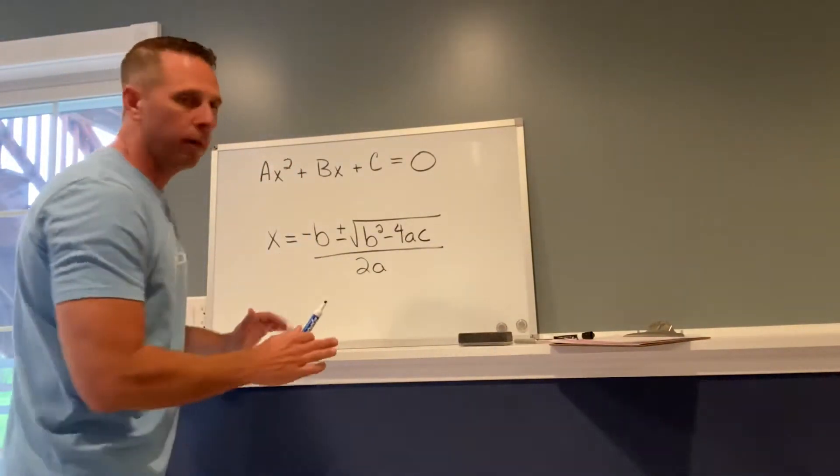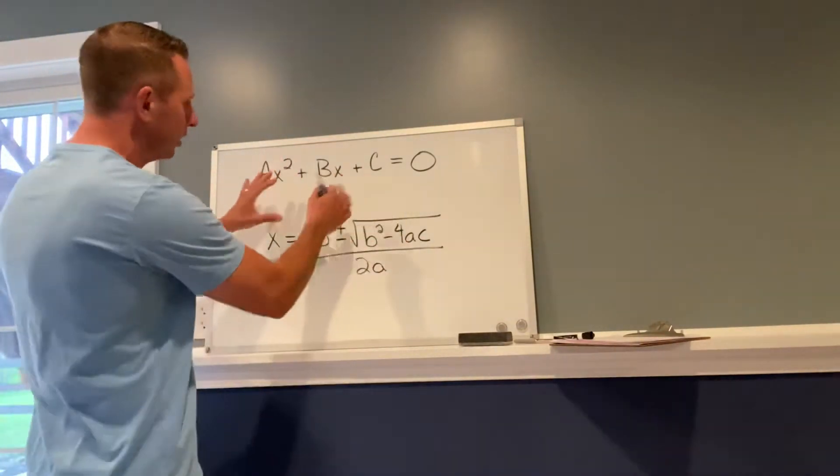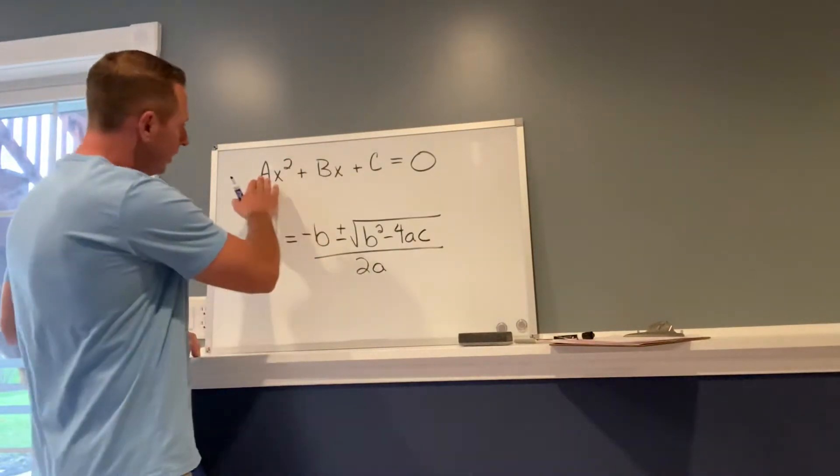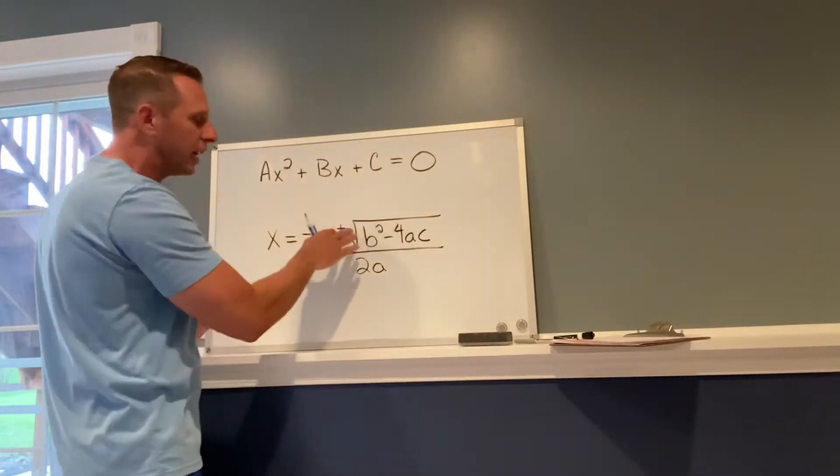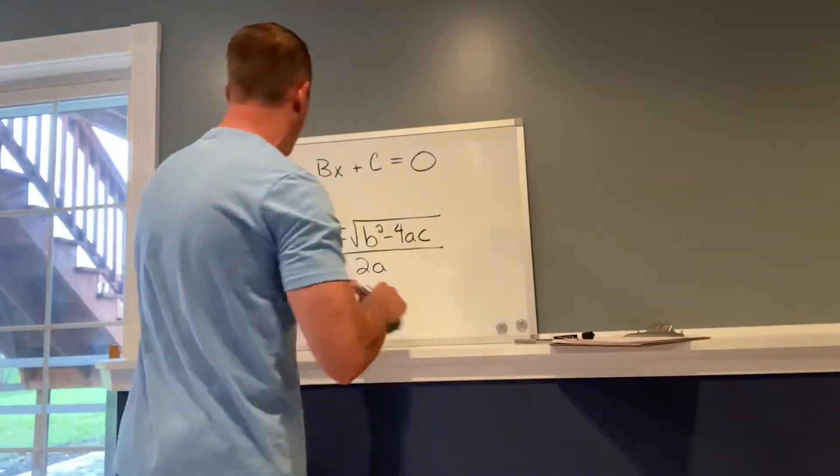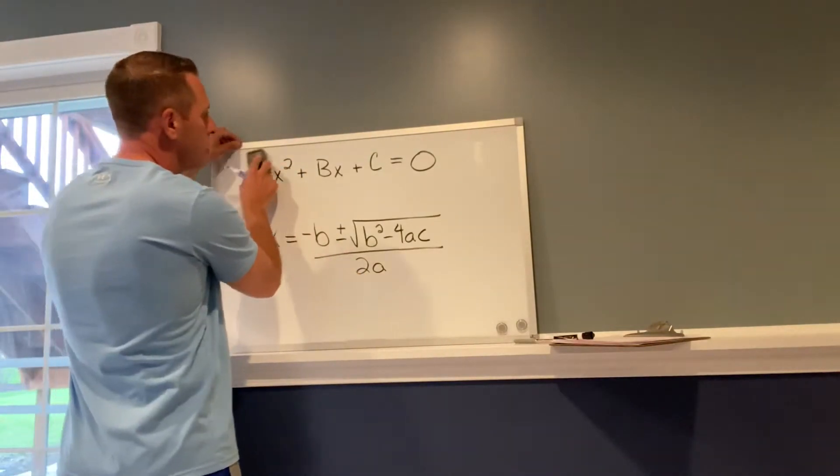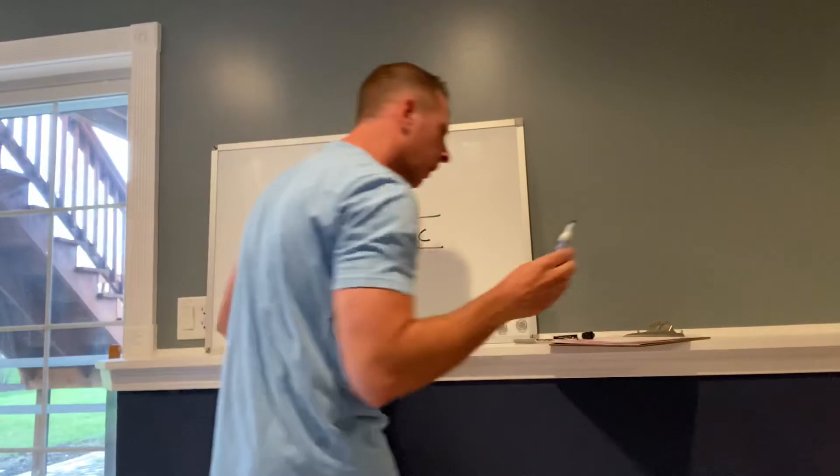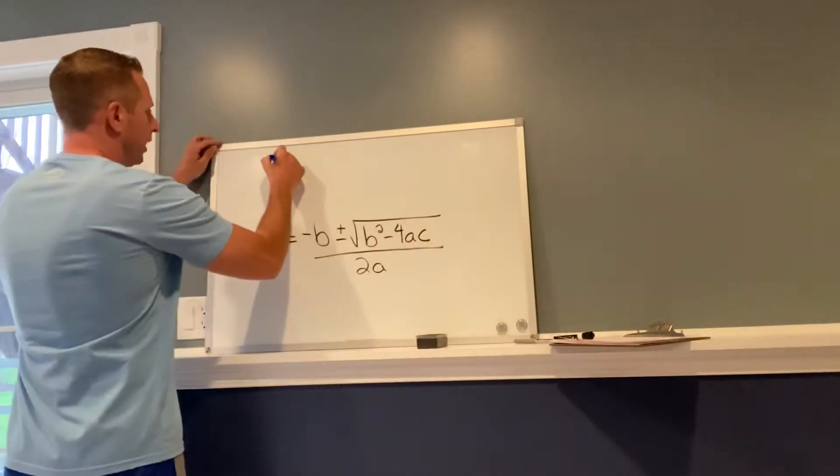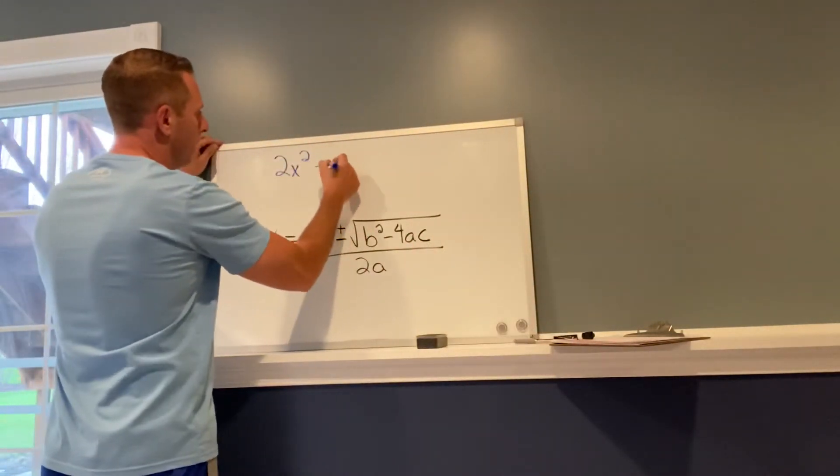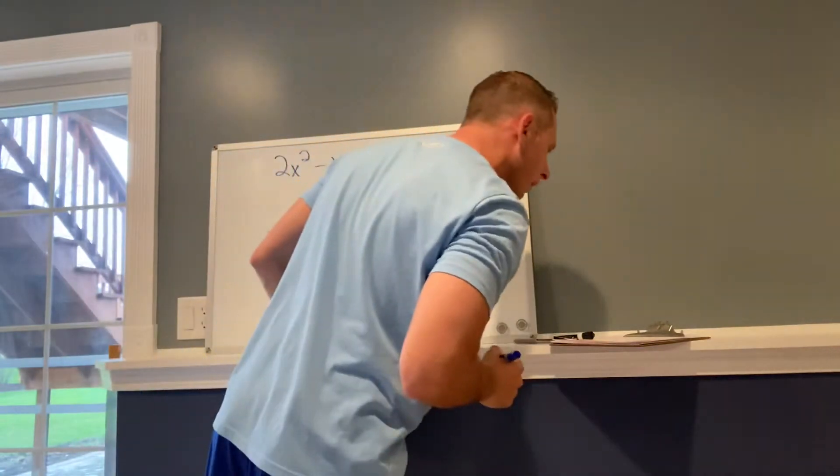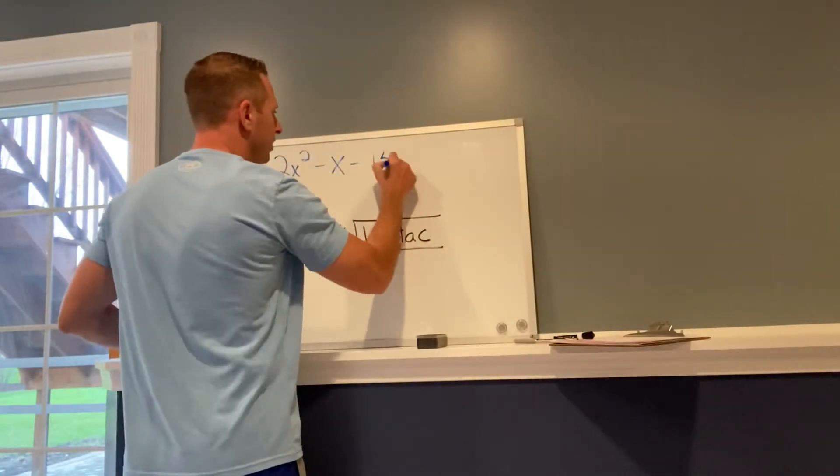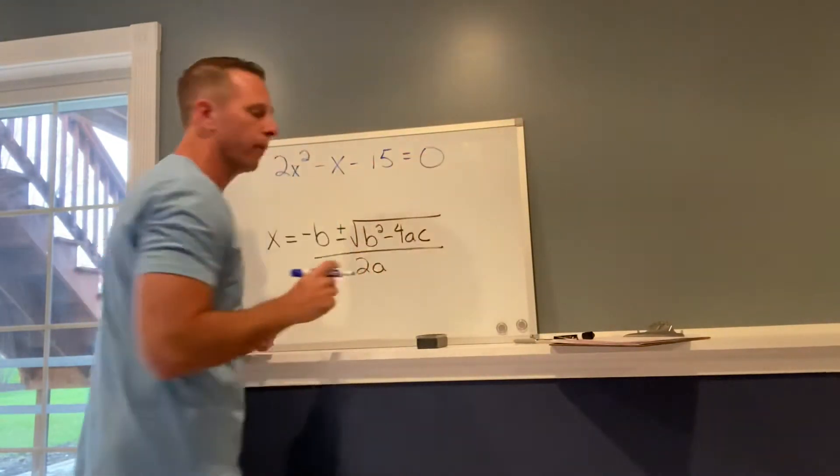We're gonna take some values and substitute them in. So instead of ax² + bx + c, I'm gonna substitute some numbers in there. I am going to write a new equation in standard form. My equation is 2x² - x - 15 = 0.